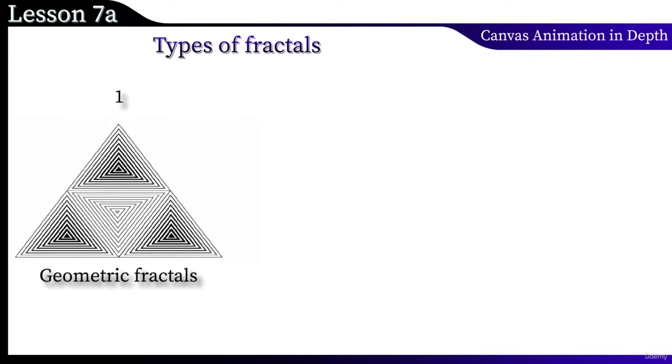Fractals can be classified in different ways. For example, we can distinguish large groups. In the first group, fractals are obtained by geometric constructions. The previous example with the Koch curve is just from this group.